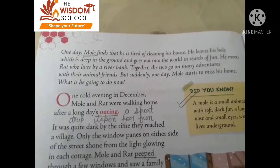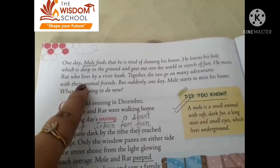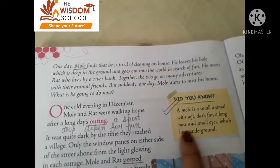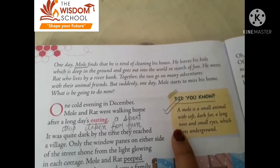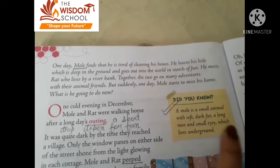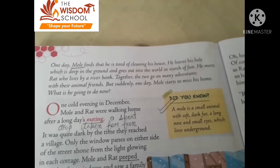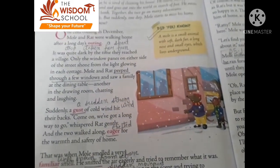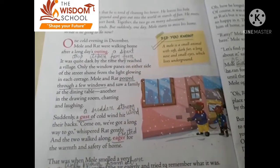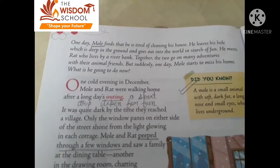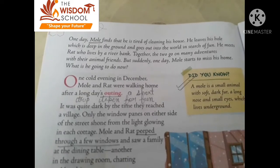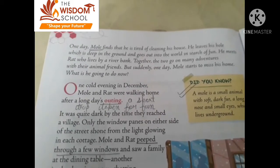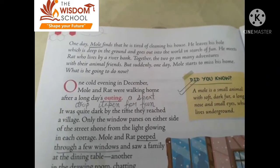This is the story of the mole. Mole means insect — a small animal with soft dark fur, along nose and small eyes, which lives underground. You can see here, here is a mole and here is a rat. What happens is that the mole goes away from its home because the house is very messy, very narrow, and very difficult.